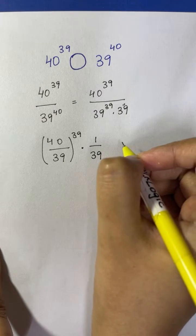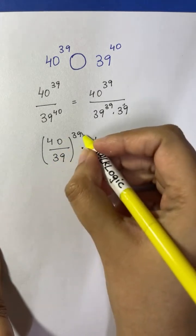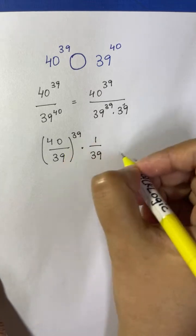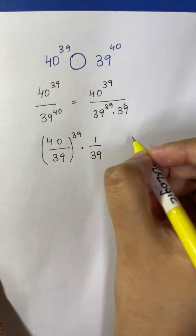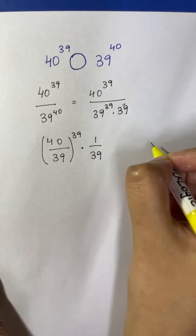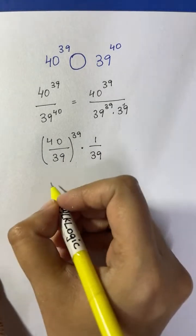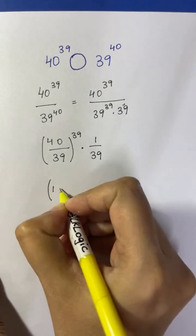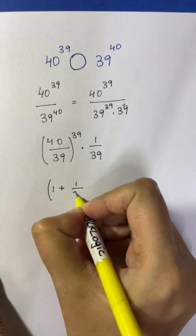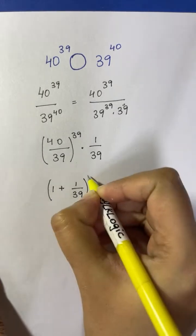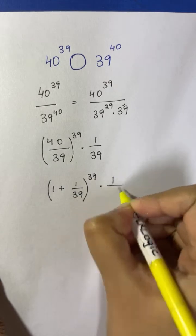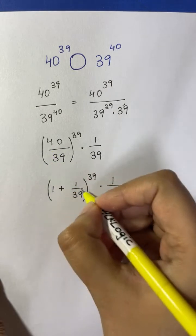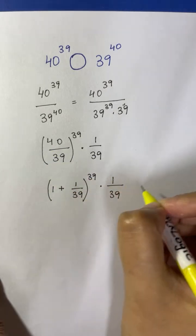Now what do you see? You have 39 appearing three times. So we can convert 40 also in terms of 39. 40 can be written as 1 plus 39 — so magic! You can write it as (1 + 1/39) whole to the power of 39, times 1 over 39. Because 40/39 is 1 and 1/39, that's (1 + 1/39) to the power of 39.